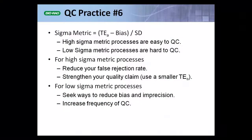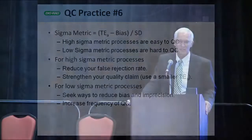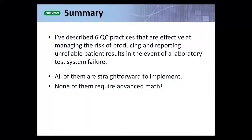For low sigma metric processes, that's where the challenge lies. The first thing to do is seek ways to reduce bias and imprecision — effectively raising the sigma value. If you can't reduce bias and imprecision, then you need to improve the power of the rule or increase the frequency of QC testing. Sigma in QC will be covered more by our next two presenters. In summary, I've described six QC practices effective at managing the risk of producing unreliable patient results in the event of a laboratory test system failure. All are straightforward to implement and none require advanced math.